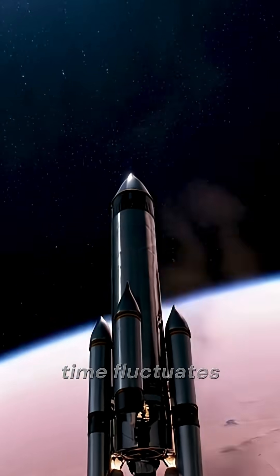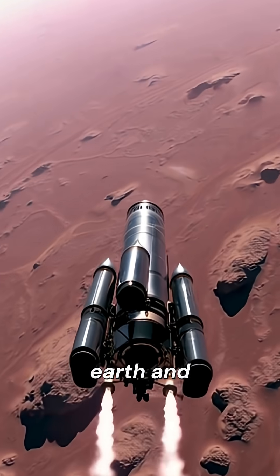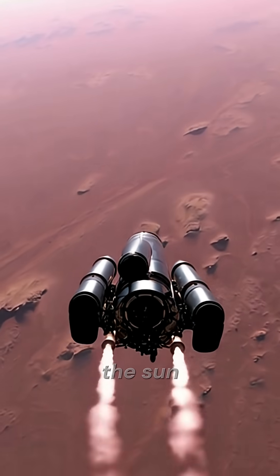However, the exact travel time fluctuates because both Earth and Mars are constantly moving in their orbits around the Sun.